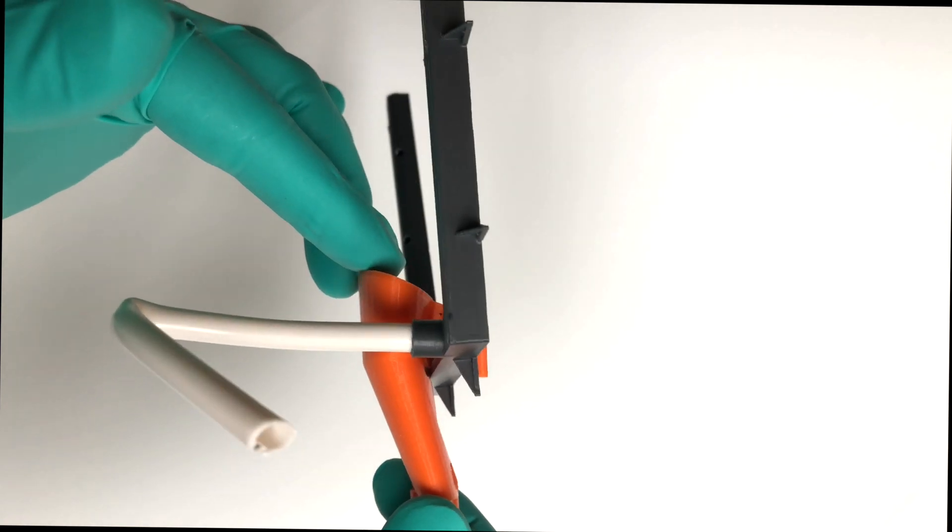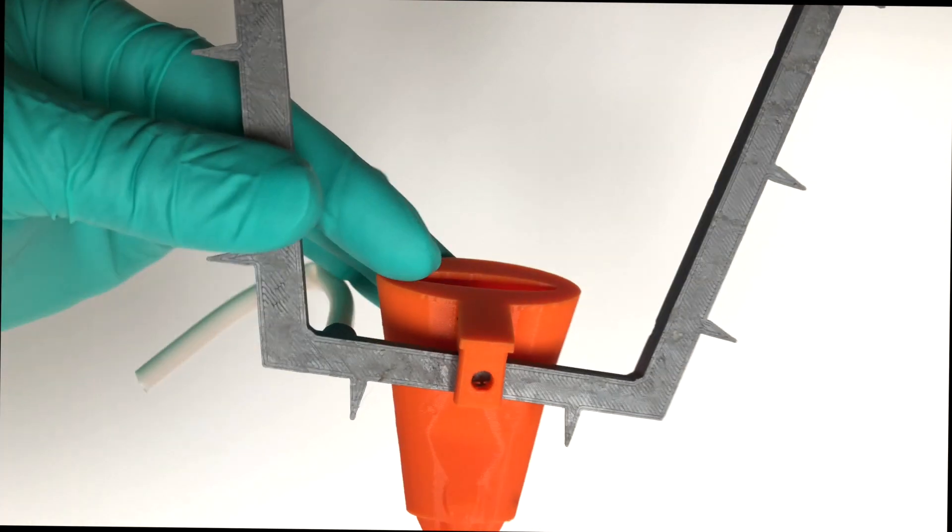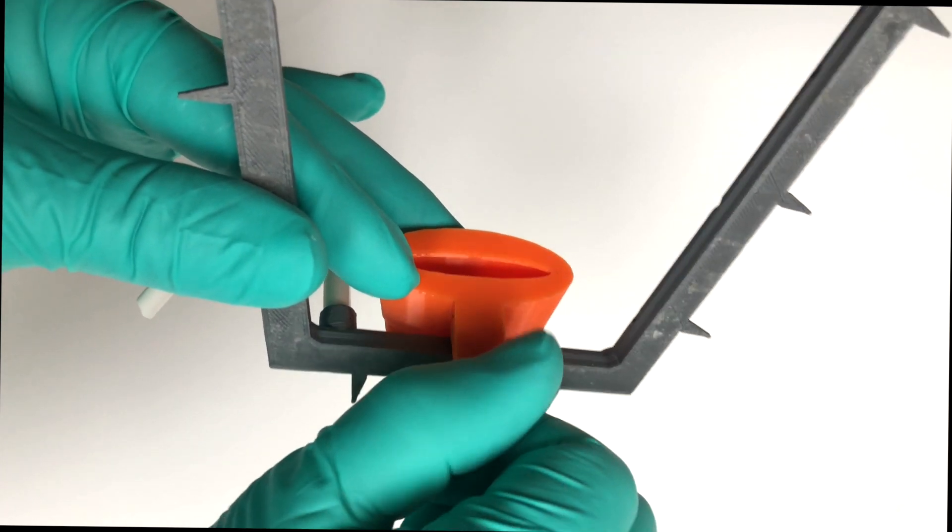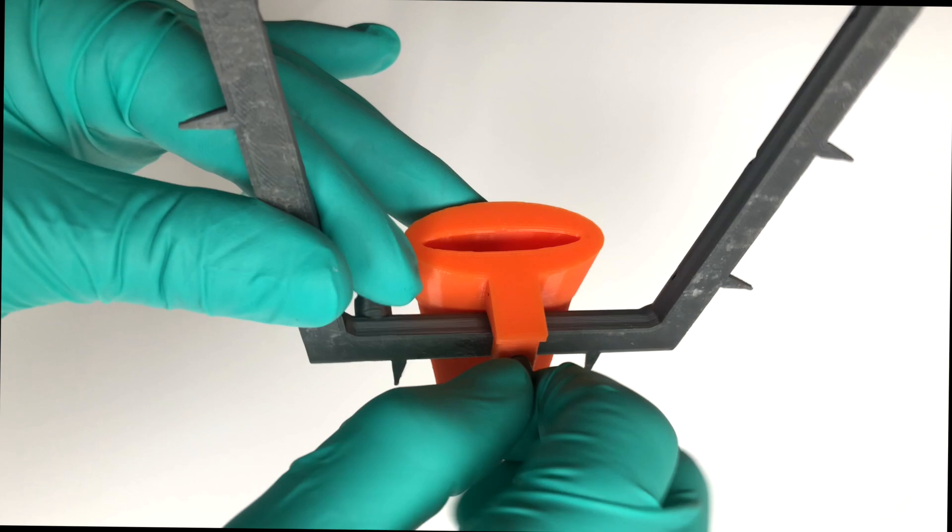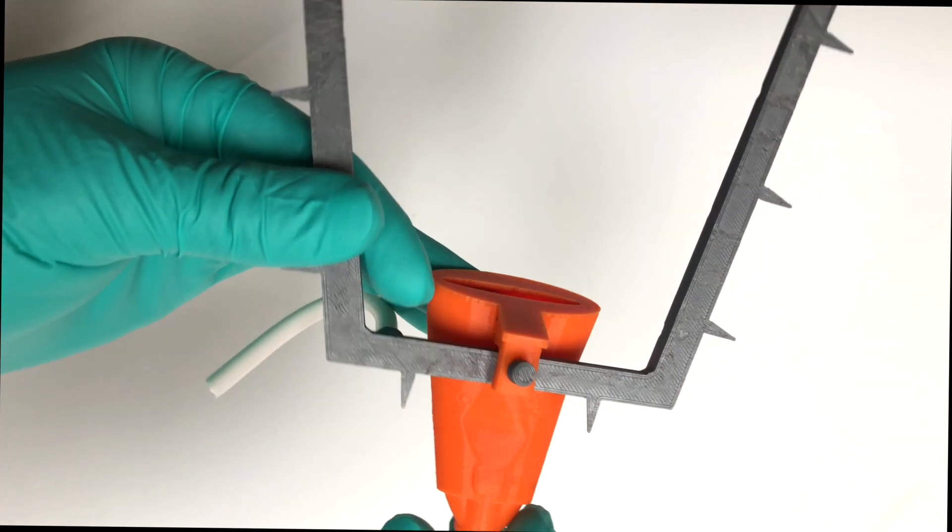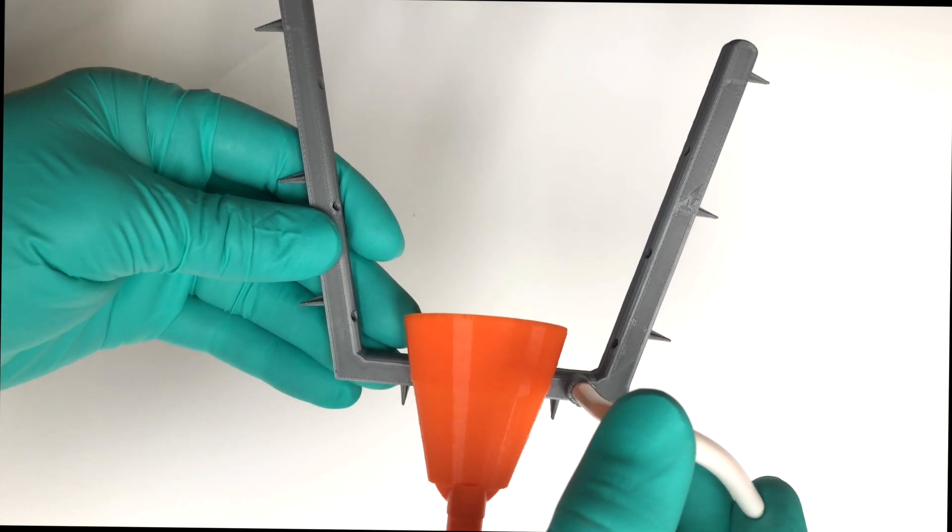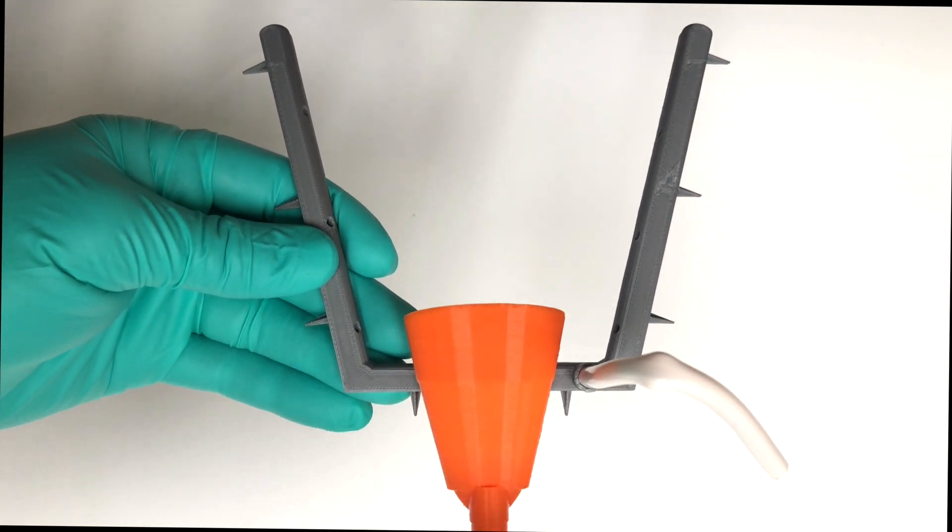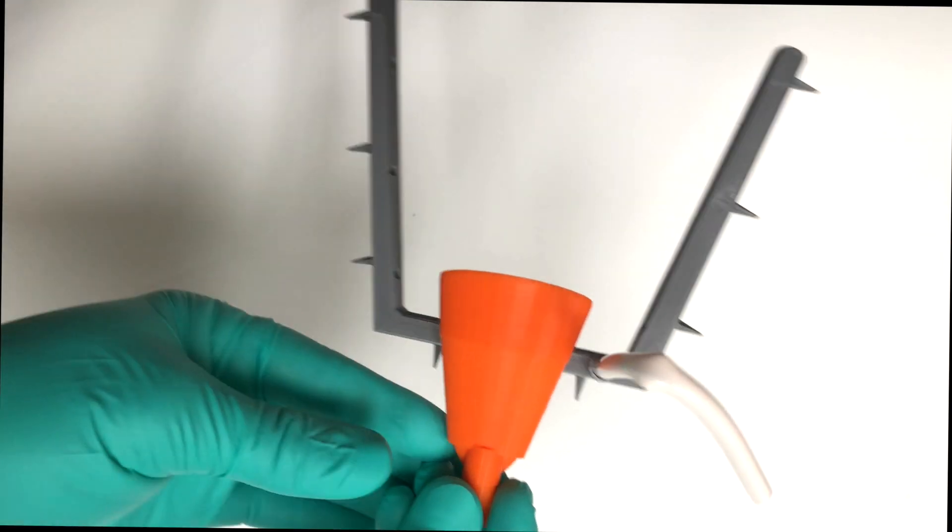And then lastly, what you need to do is you need to secure that with the retention bolt, which is also 3D printed and tighten that finger tight, as tight as you could get it. And that's going to stabilize the whole thing together. And of course that hooks up to your saliva ejector there. And the high volume there is going to hook up to your high volume suction unit.